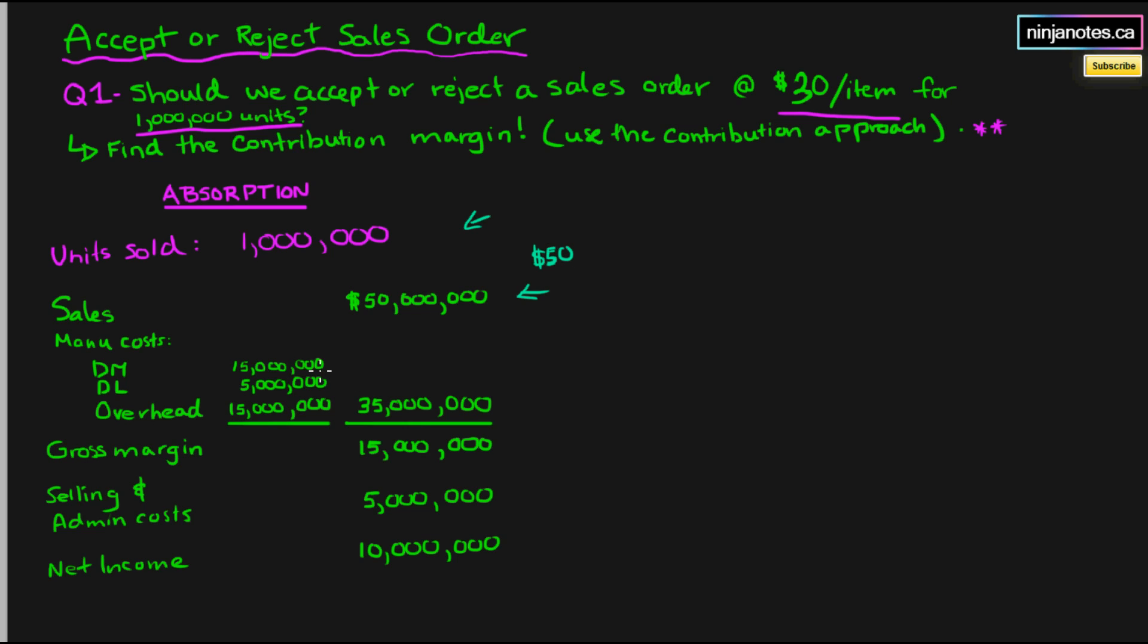Direct materials are fifteen million, which means just simple division, fifteen dollars per unit. Direct labor is five dollars per unit. Overhead is fifteen dollars per unit. The overhead of course encapsulates both variable overhead and fixed overhead, so don't let that fool you.